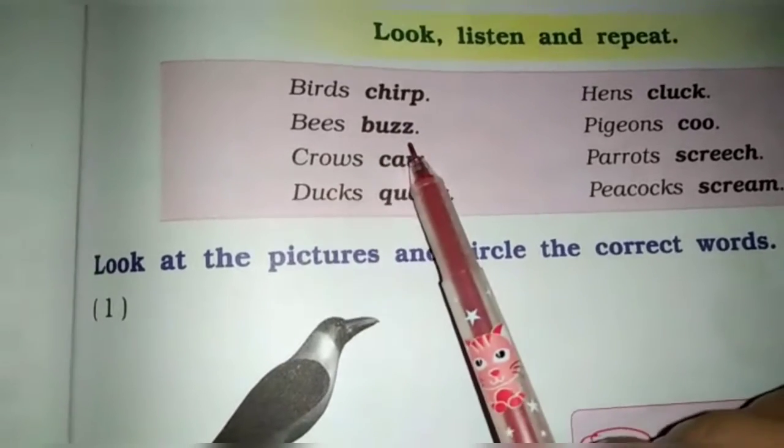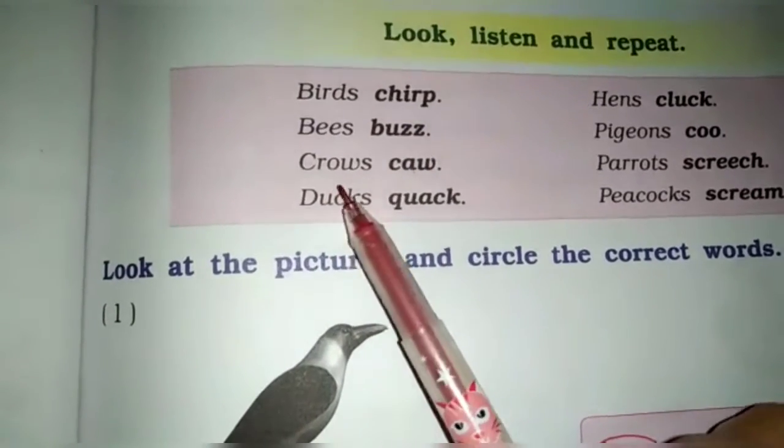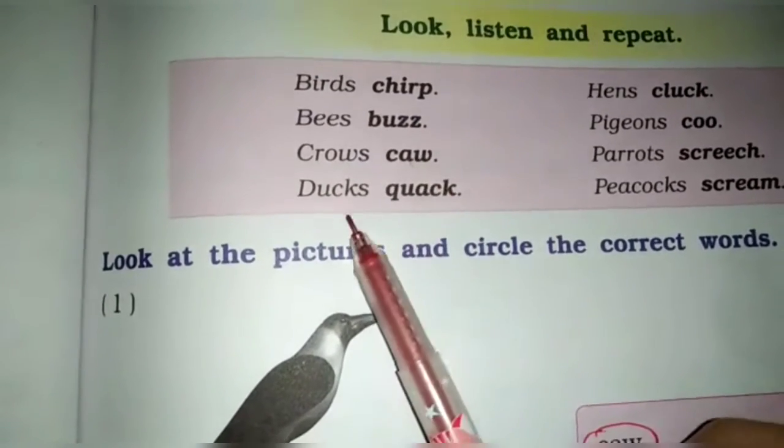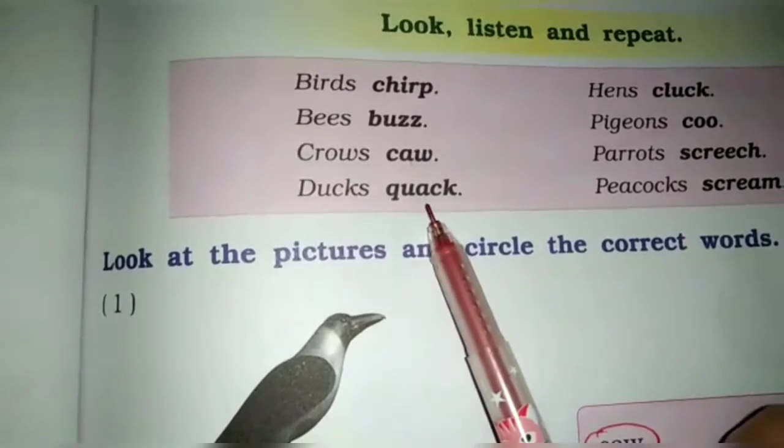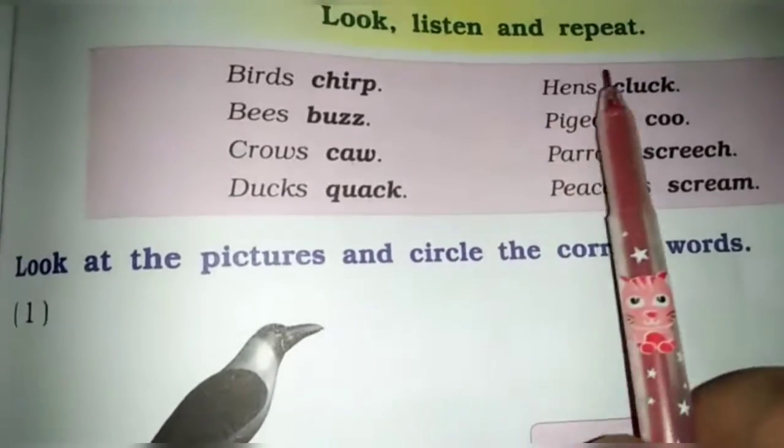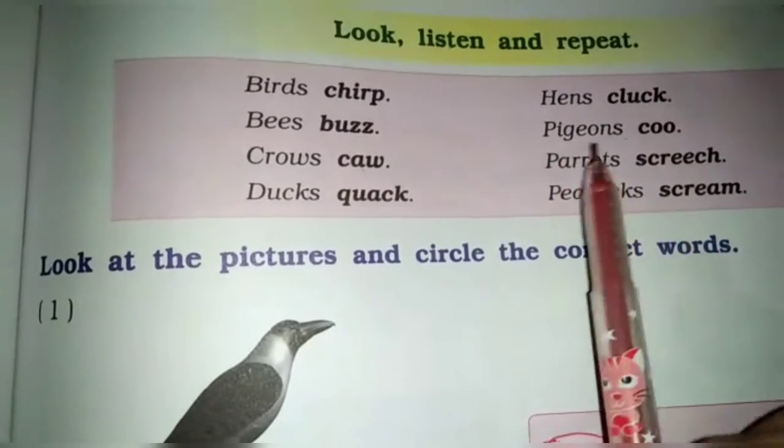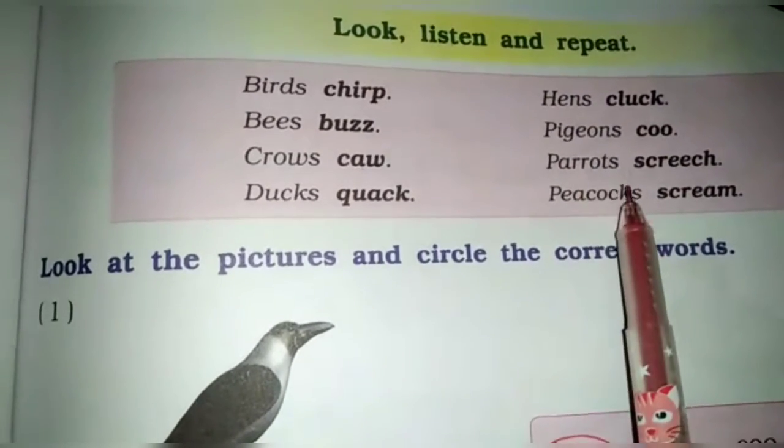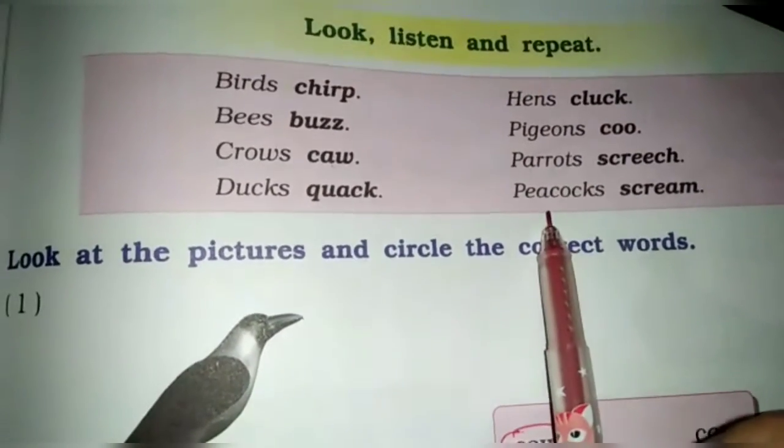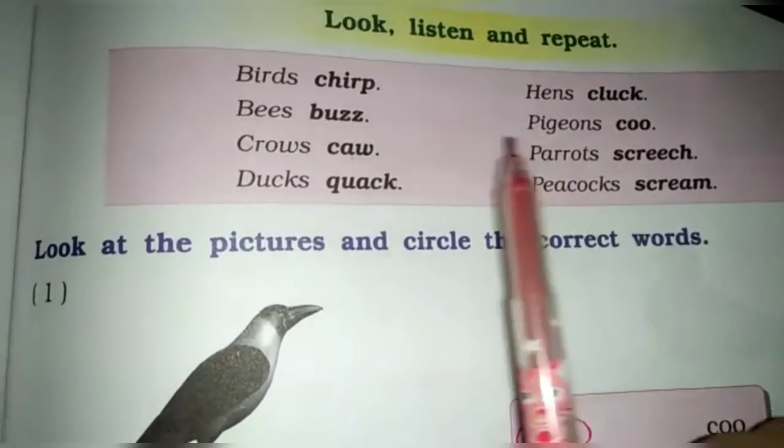So bird's sound is chirp. Bees' sound is buzz. Crows' sound is caw. Ducks' sound is quack. Hens cluck. Pigeons coo. Parrots screech. And peacock scream.